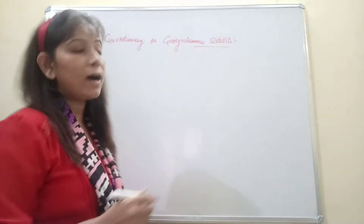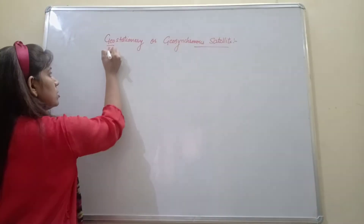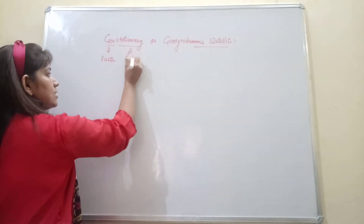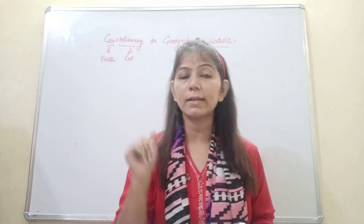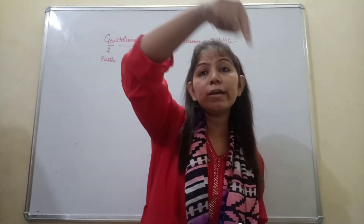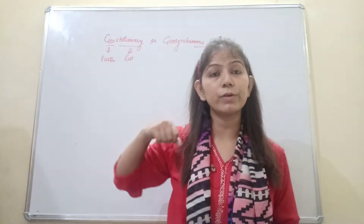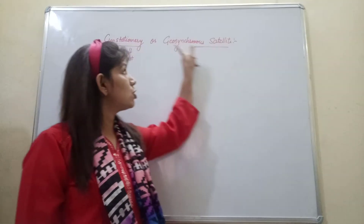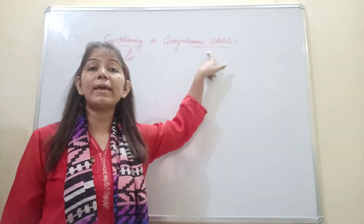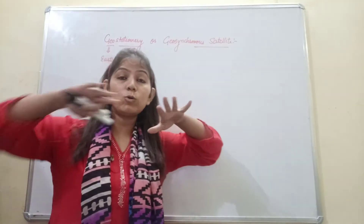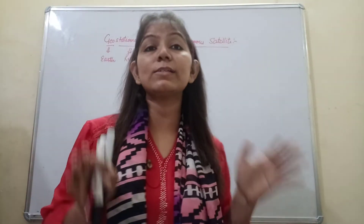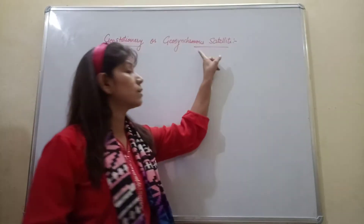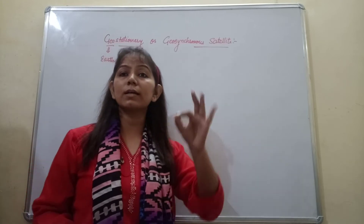Geo means Earth and stationary means rest. So a satellite that orbits such that it appears stationary relative to Earth is known as a geostationary satellite. Geosynchronous means the satellite revolves in the same orbit as Earth's rotation. That satellite is known as a geosynchronous satellite.